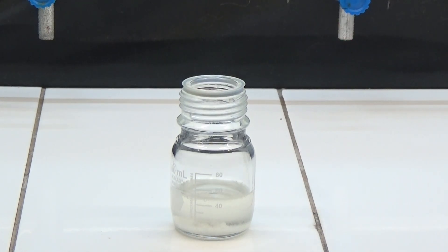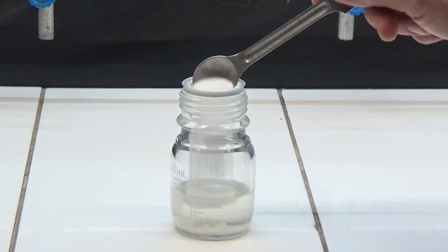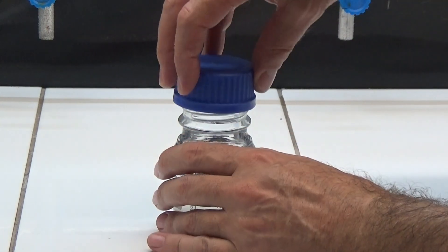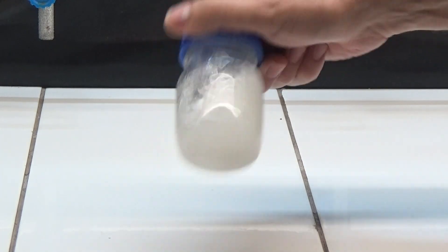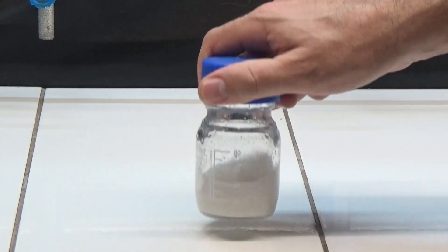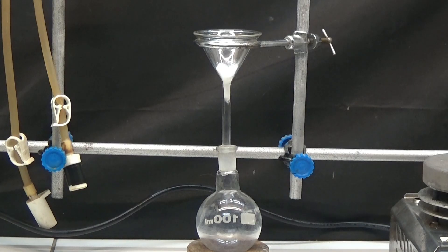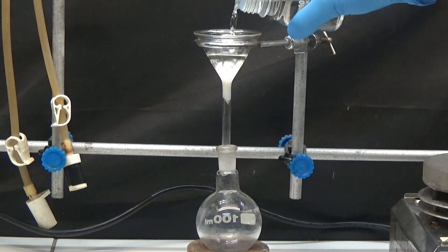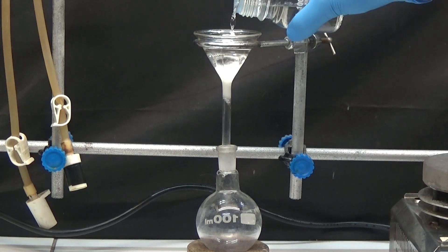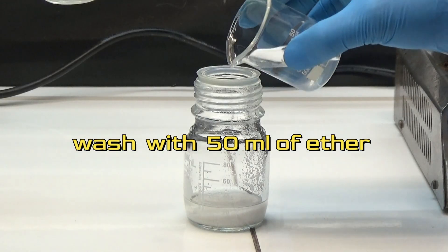Anhydrous magnesium sulfate is used to dry the organic phase and it is allowed to stand for a few hours. Filter to separate magnesium sulfate and wash the desiccant with about 50ml of ether to extract as much ester as possible. The 50ml of ether is attached to the dried ester.